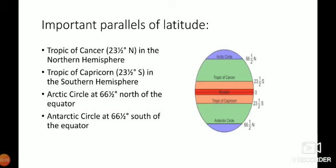Important parallels of the latitude. There are four important parallels of the latitude so far the climatic conditions of the earth are concerned. Tropic of Cancer is the first line which is 23 and a half degrees north in the northern hemisphere. Tropic of Capricorn which is 23 and a half degrees south in the southern hemisphere.